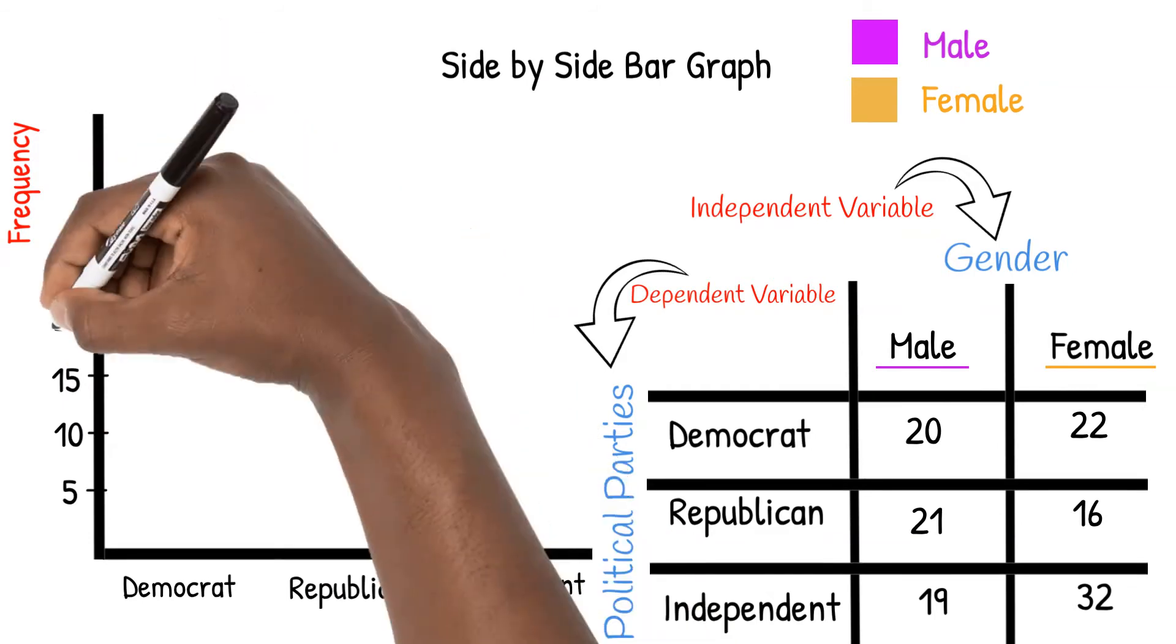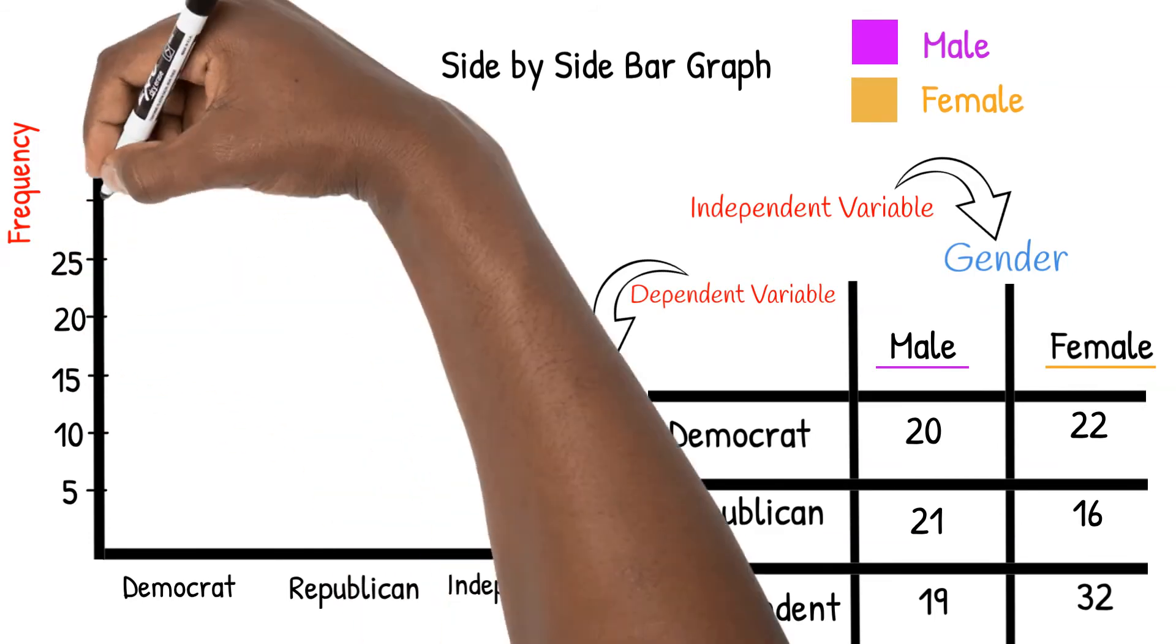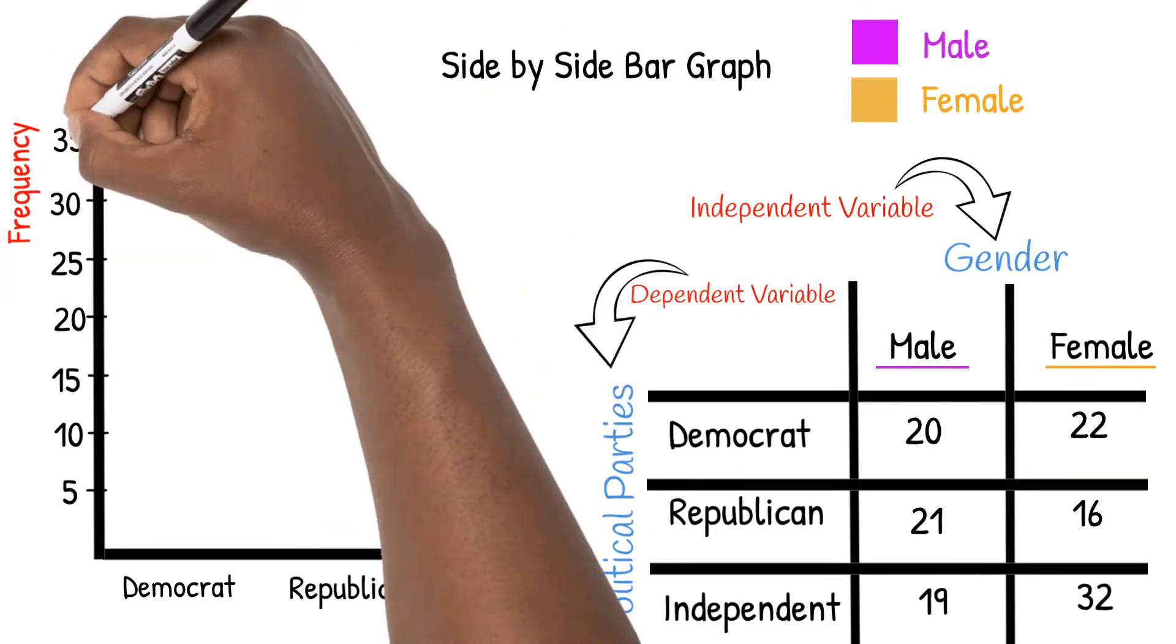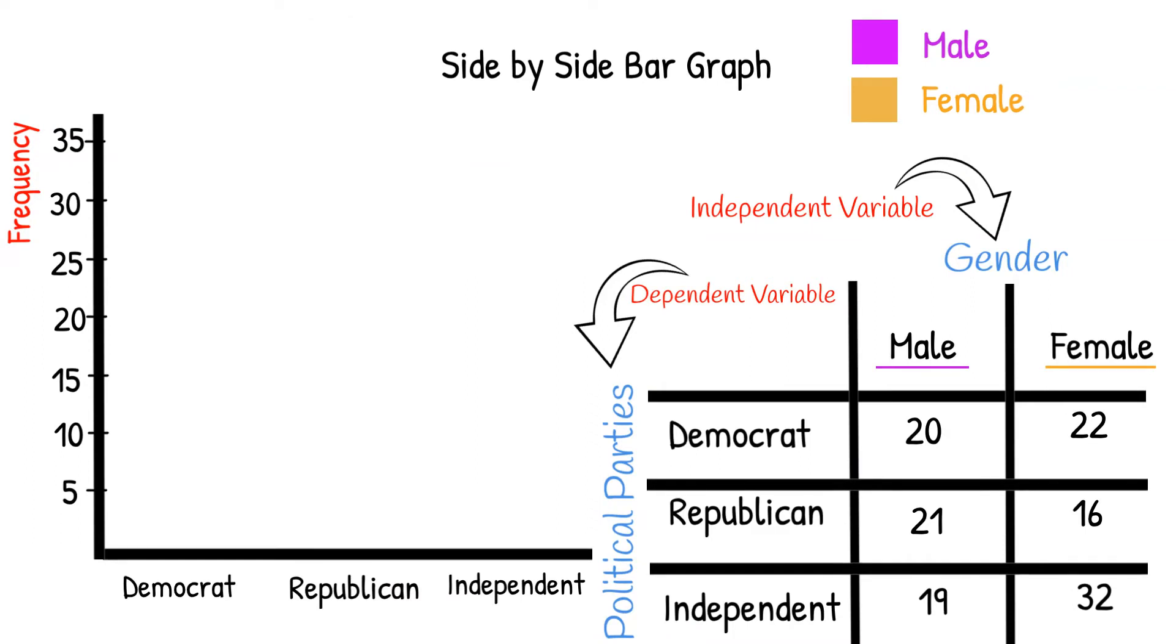Remember that we must pick an axis scale and stick to it. Now we're ready to draw our bars. Each political party will have two bars, one for males and one for females.